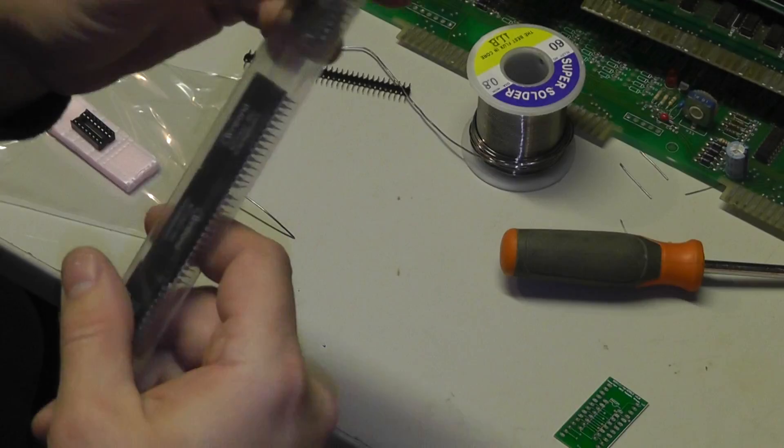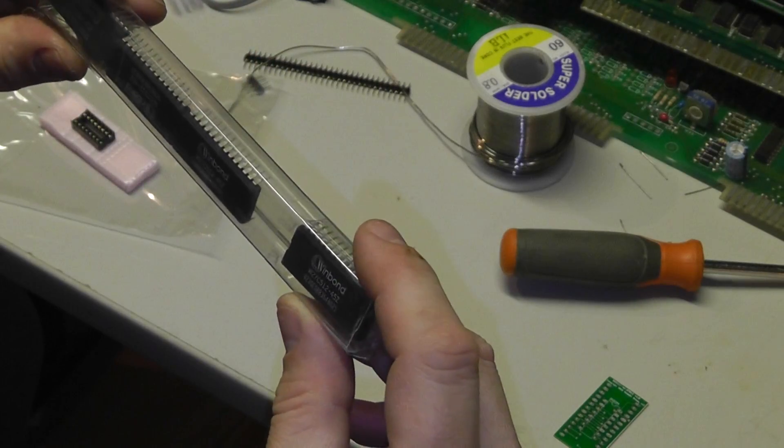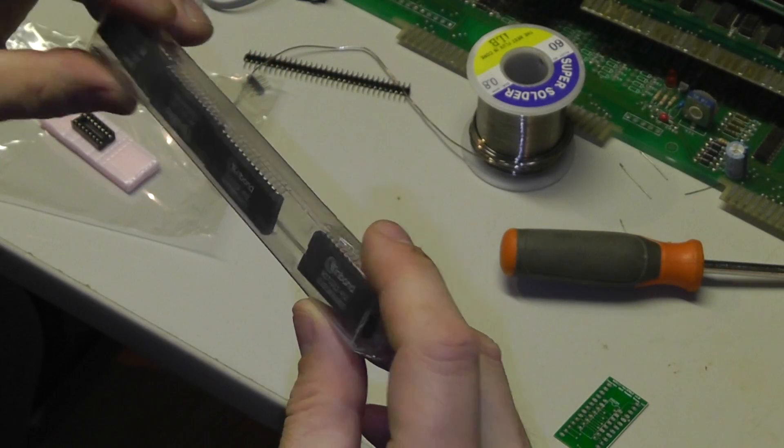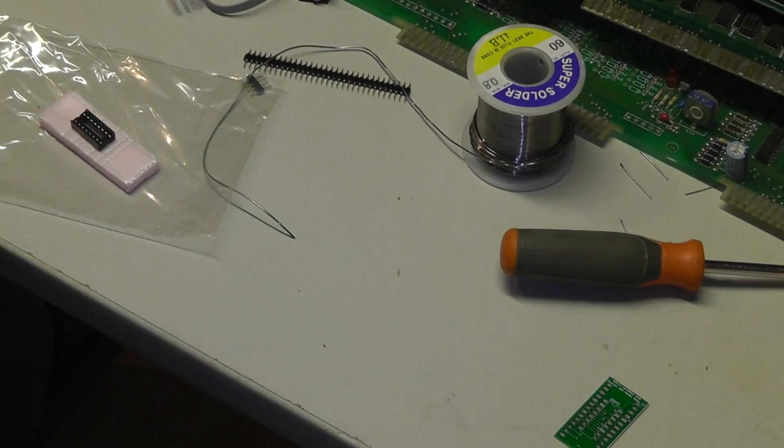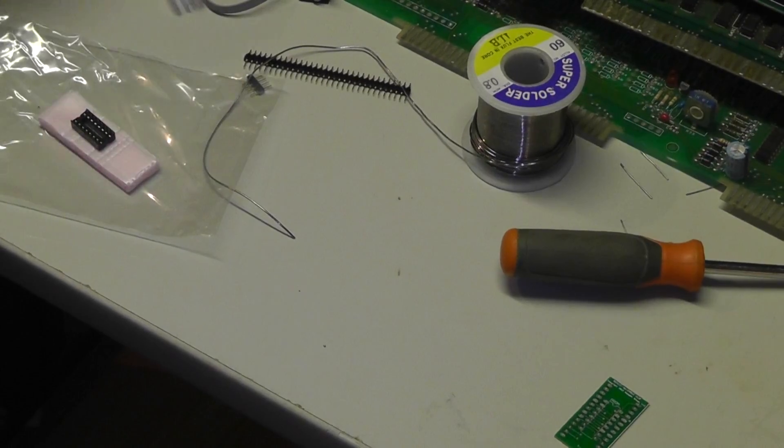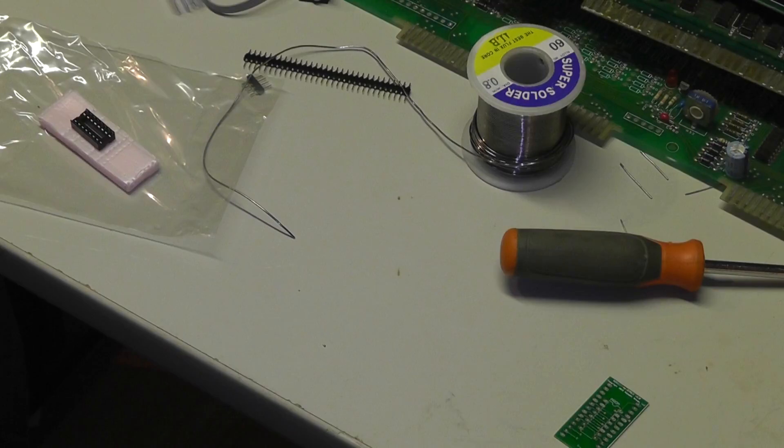These are a little bit faster than normal EEPROMs. These are W27C512s. They're like 45 nanosecond access times, I guess. So anyway, they're faster and you can't use the regular EEPROMs so you have to use something like this. The only downside of using these.